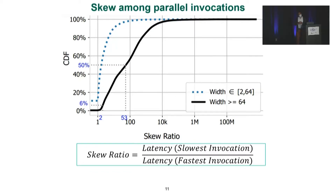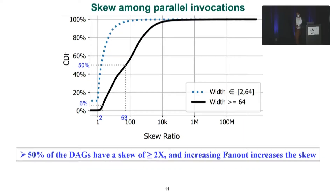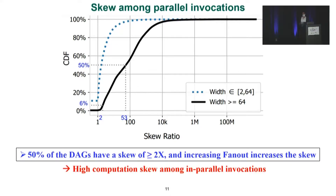The second observation is that there is a high skew among parallel invocations. We define skew as the ratio between the latency of the slowest invocation to that of the fastest invocation within the same stage. We show two distributions: one for DAGs with low fanout between 2 and 64, and another for wide DAGs with fanout more than 64. As you can see, 50% of DAGs have a skew of two times or more, and increasing the fanout also increases the skew. Accordingly, we must handle this high computation skew in our optimization.